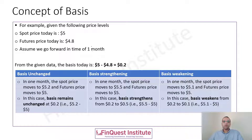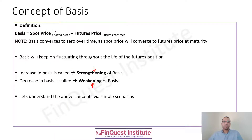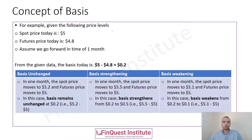We'll take a time of one month, so we're going forward in time by one month. From the given price data, the basis is the difference between the spot price and the futures price: $5 minus $4.80 gives us $0.20, which is what we call the basis.